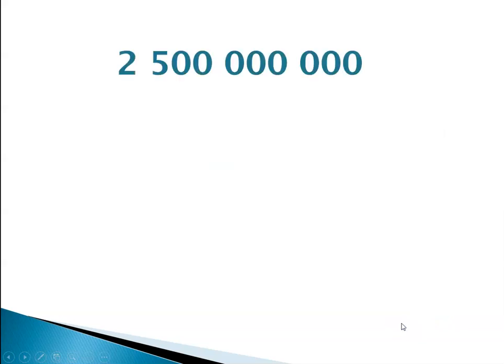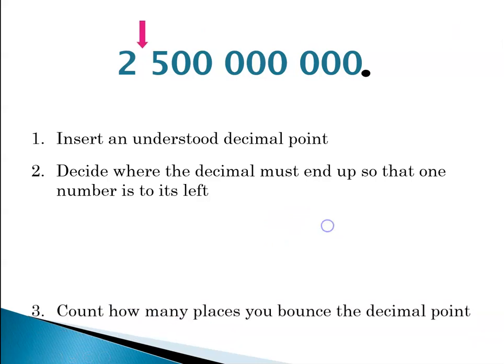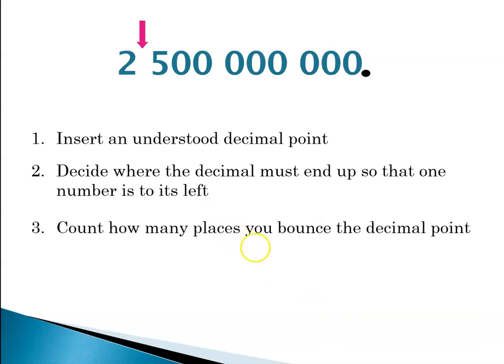So let's first look at taking a number in standard notation and converting it to scientific notation. So step one: insert the understood decimal point. Step two: decide where that decimal point should end up so that there's only one digit to its left, that would be there between the two and the five. And now we need to count how many places we bounce our decimal point. So here we go: one, two, three, four, five, six, seven, eight, nine.